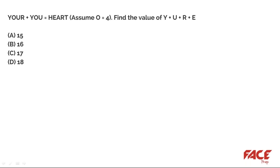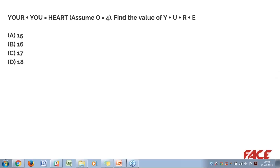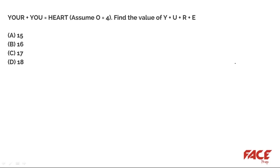Here's a fun cryptarithmetic question — there's a lot of buzz around this one. This is a repeated question from the last phase: YOU + YOU = HEART, where O = 4. Find the value of Y + U + R + E. There are two ways to solve this. The first way: the answer is 17. If you see this exact question, just tick 17 and don't waste time.